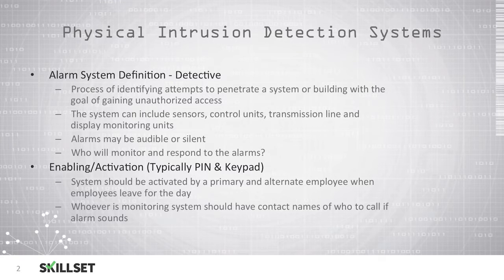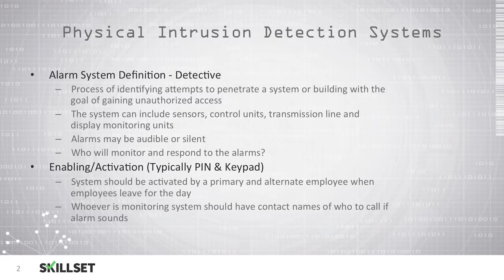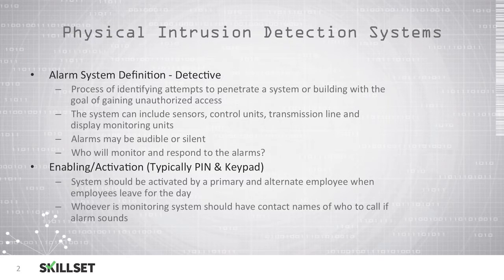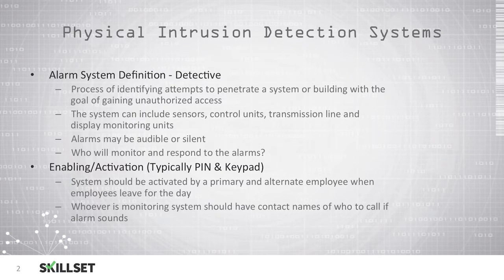These systems are typically enabled and deactivated using a keypad with a PIN number. The system should be activated by a primary and an alternate employee when employees leave for the day. This way, if the primary employee forgets to turn on the alarm or is off for the day, the alternate employee will be able to make sure the alarm is activated. Whoever monitors the system should have names and phone numbers of who they should call if the alarm goes off.